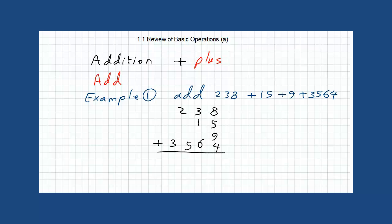8 plus 5 is 13, plus 9 is 22, plus 4 is 26. Put 6, 2 in the hand. 2 plus 3 is 5, plus 1 is 6, plus 6 is 12. Put 2 and 1 in the hand. 1 plus 2 is 3, 3 plus 5 is 8, and bring 3 down. So we have our answer which is 3826. Some questions come in a different way.